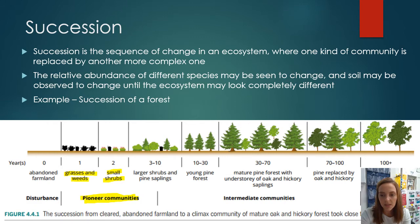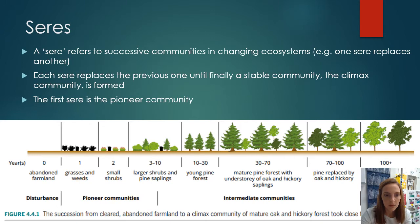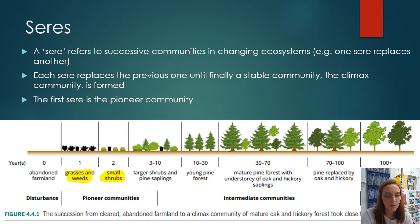The climax community is the point where the ecosystem is really stable and functioning at its maximum. A seer is a community that has replaced the previous community — for example, small shrubs are a seer that replaced the grasses and weeds. They are successive communities replacing previous ones, with the first seer being the pioneer communities, and each getting replaced over time as succession progresses.